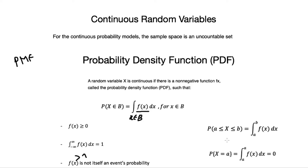The probability that X equals a specific value is always zero for a continuous random variable. This is because integrating from a point to the same point always yields zero. Therefore, when X is continuous, probabilities are always defined over an interval, not at a specific element or number.